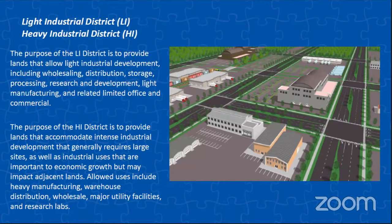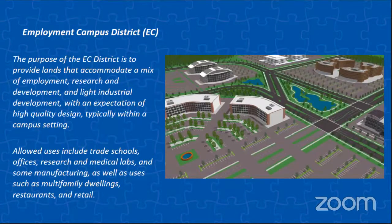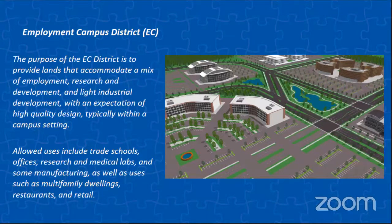Our industrial districts are our light industrial LI and our heavy industrial. Light industrial provides lands that mostly will include wholesaling, distribution, storage, processing, research and development, and other light industrial development and manufacturing. The HI district provides lands that accommodate intense industrial development that generally requires large sites — uses that may impact adjacent lands, such as heavy manufacturing, warehouse distribution, wholesale, major utility facilities, and research labs. We then have our employment campus district, which provides lands that accommodate a mix of employment, research and development, and light industrial development with an expectation of high quality design, typically within a campus setting. You may see trade schools, offices, research and medical labs, some manufacturing, as well as uses such as multifamily, restaurants, and retail.